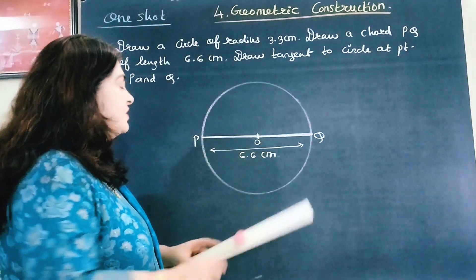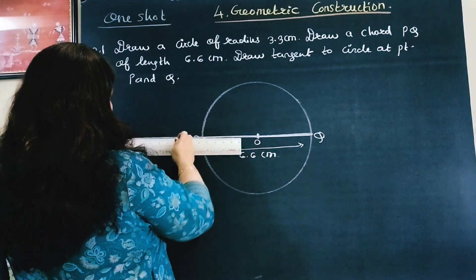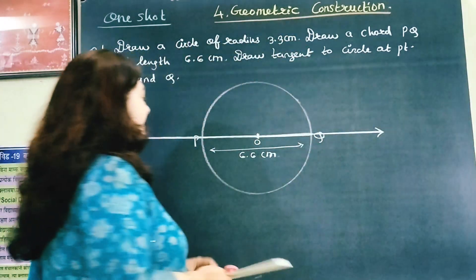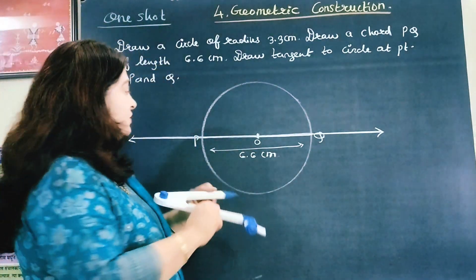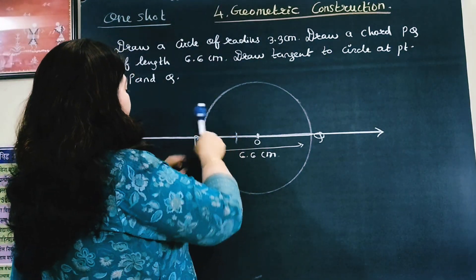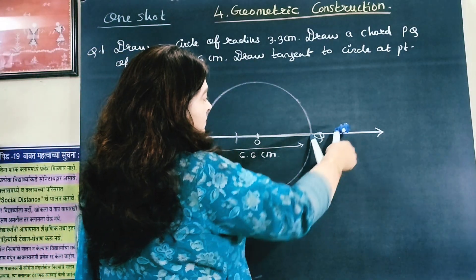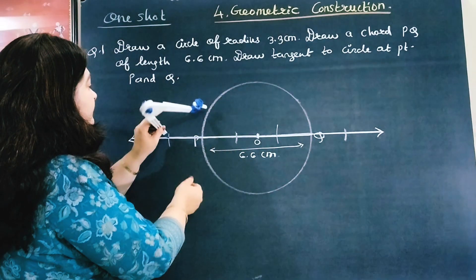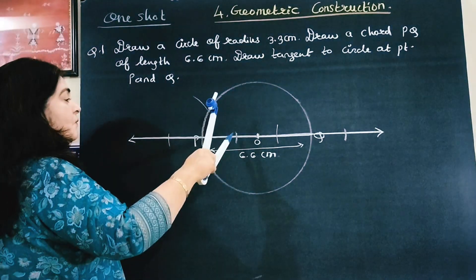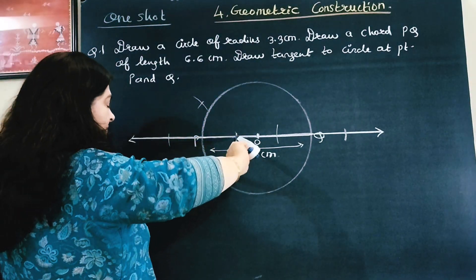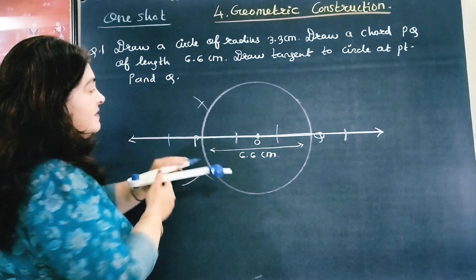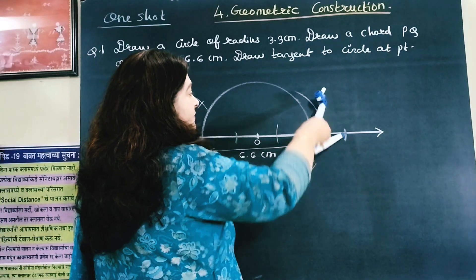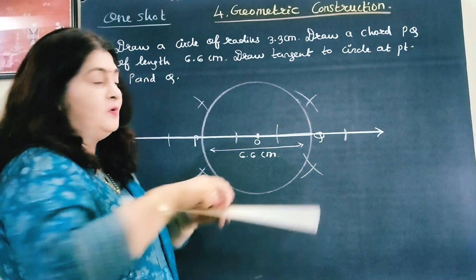Now we have to draw tangents at points P and Q. Let us extend this line and draw perpendiculars at P and Q — that will be the tangent at those points. Keep your compass here, take two arcs, then put compass at Q and draw two arcs. Increase the compass slightly, draw one arc upward and one downward from each point, then draw the intersecting arcs.